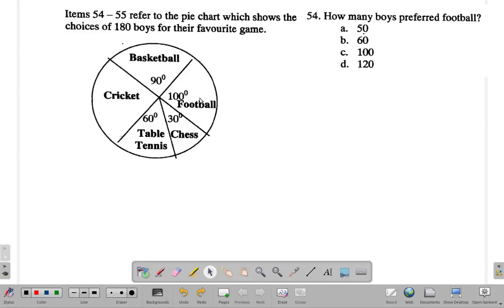Alright, let's see. This is 100 degrees. 90 degrees is a quarter of the circle. 100 degrees is a little more than a quarter. You have 180 boys.